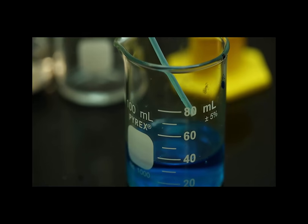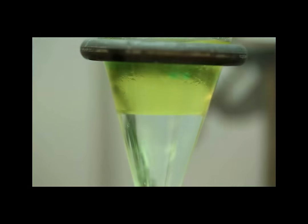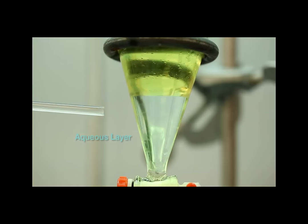To verify the identification of the layers, you can perform a water drop test. Using a dropper, add a few drops of water to the funnel, and observe which layer the droplets mix into. As expected, the heavier layer is on the bottom, leaving this as our aqueous. In this case, this is our organic layer.